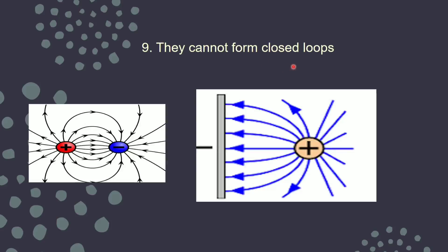Field lines cannot form closed loops. For example, if this is a line charge which is negative, the field lines from the positive will come out and end at the negative plate, but they will not pass through the plate. Lines start from the positive charge and end at the negative charge but do not go inside the charged body. Unlike magnetic field lines which go inside the magnet, inside charged bodies there are no field lines — so they will not form closed loops.